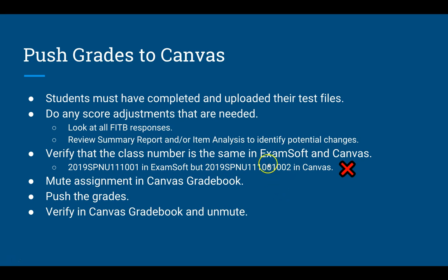Once you have done all of those first three things, the procedure is pretty straightforward. First, you start out in Canvas, go to your class, and go to your grades section. Once you're there, it is recommended that you mute the assignment you're pushing grades for. This makes it so that the students don't see these grades — they don't automatically show up in the student view. Do that until you're comfortable that everything looks okay, and once you're happy with everything, you can unmute it.